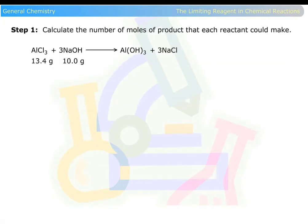Step 1: Calculate the number of moles of product that each reactant could make. Watch below as the equation is filled out.